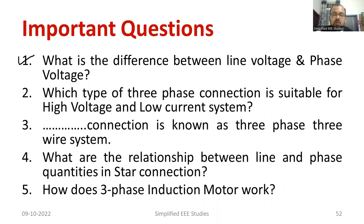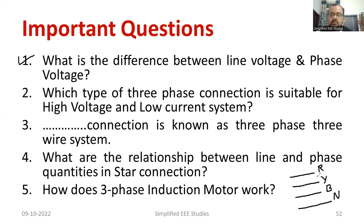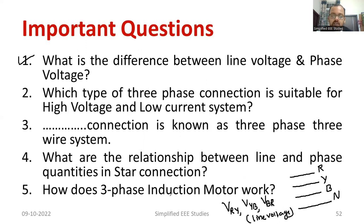Line voltage is the voltage between any two lines. Consider a three-phase circuit with four wires: R, Y, B, and neutral. The voltage between R and Y, or Y and B, or B and R — these are called line voltages. Phase voltage refers to VRN, VYN, and VBN — that is, the voltage across a line and neutral. That is called phase voltage.